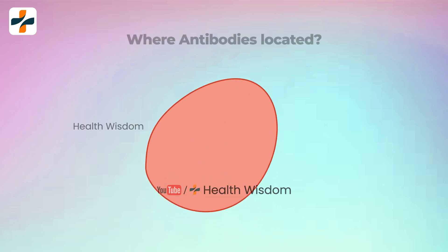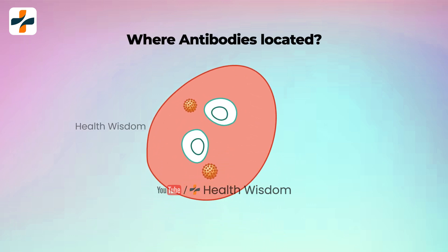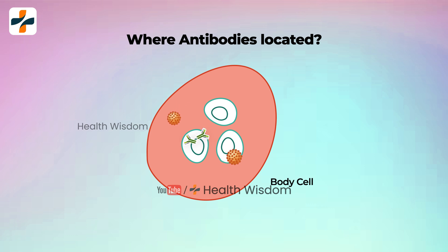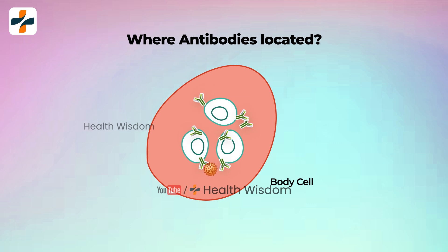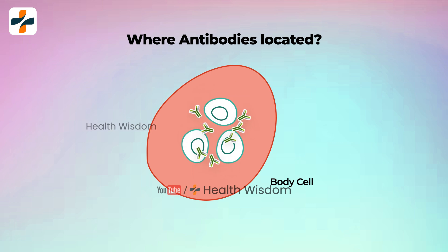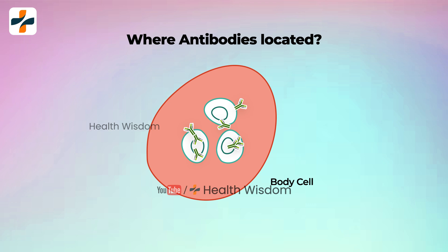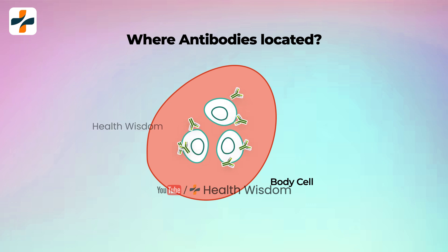Who produces antibodies? Antibodies are produced by B cells in white blood cells. When an antigen comes into contact with a B cell, it causes the B cell to divide and clone. These cloned B cells release millions of antibodies into your bloodstream and lymph system.